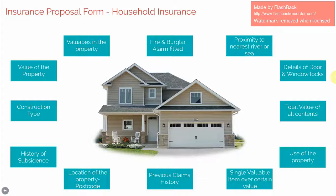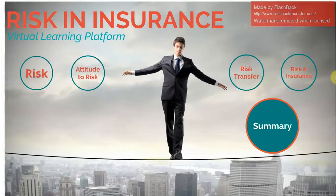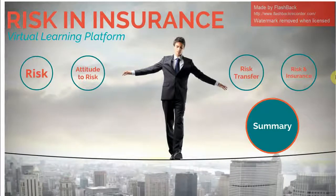Insurers at the sales stage will usually take the responses in the proposal form on utmost good faith and ensure the risk. It is at the claim stage that insurance companies may check that the actual details of the risk match the details provided at the proposal stage. For example, loss adjusters are often asked to estimate the total value of contents within a home when attending the property to deal with a contents claim. If the actual value of the contents is significantly more than what was suggested by the policyholder at proposal stage, the insurance company may question whether they would have accepted the risk or charged a higher premium.